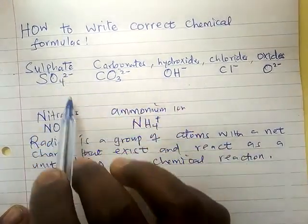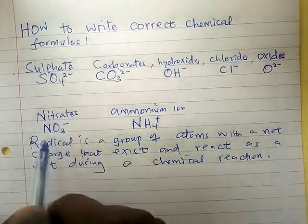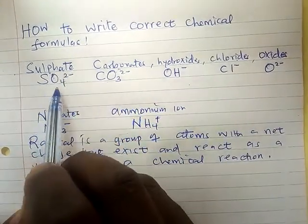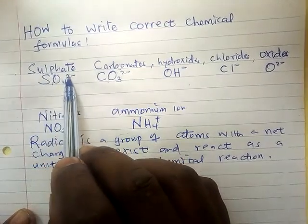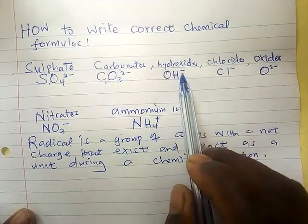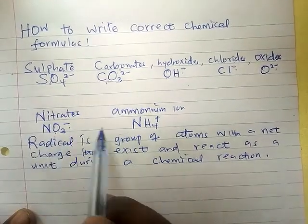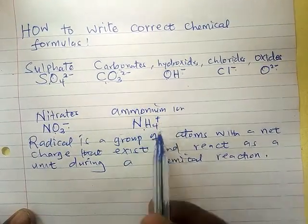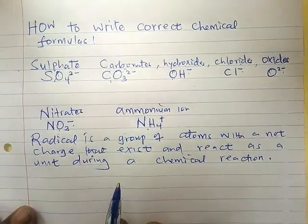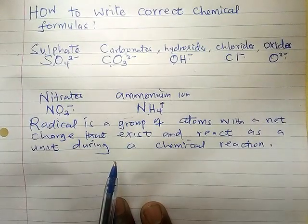So radicals react as a group, as a unit. For radicals, the valency of the radical is the charge. For example, the valency of sulfate is two, carbonate is two, hydroxide is one, chloride is one, oxygen is two, nitrate is one, and ammonium is one. Knowing the charge — the valency — is very important when writing equations.